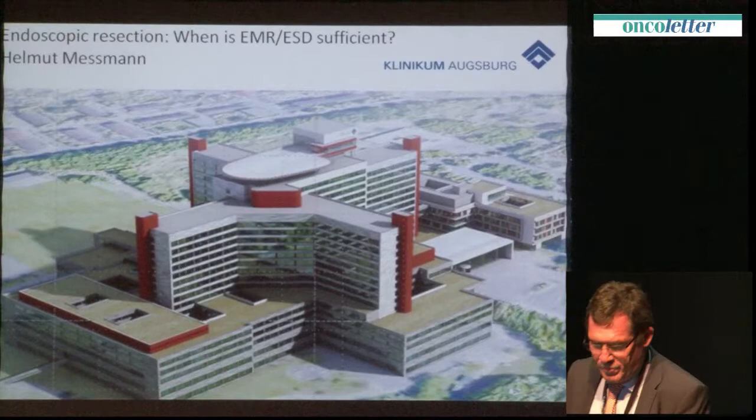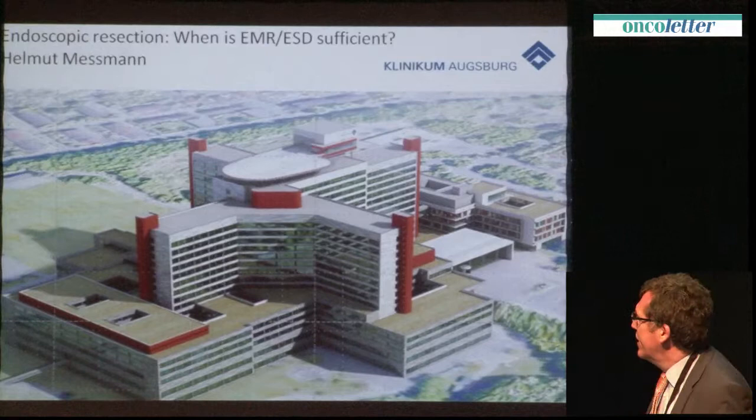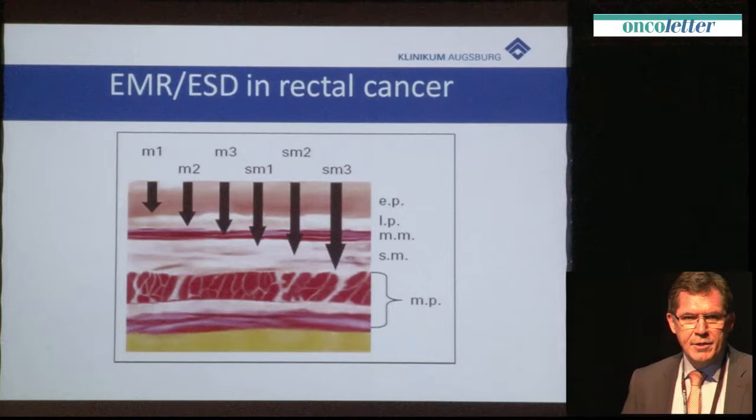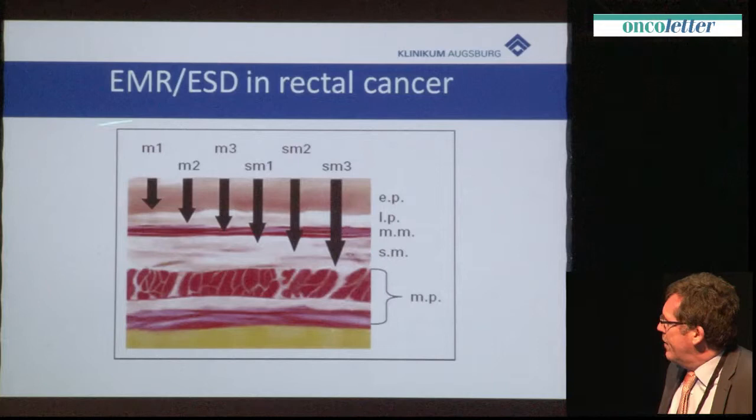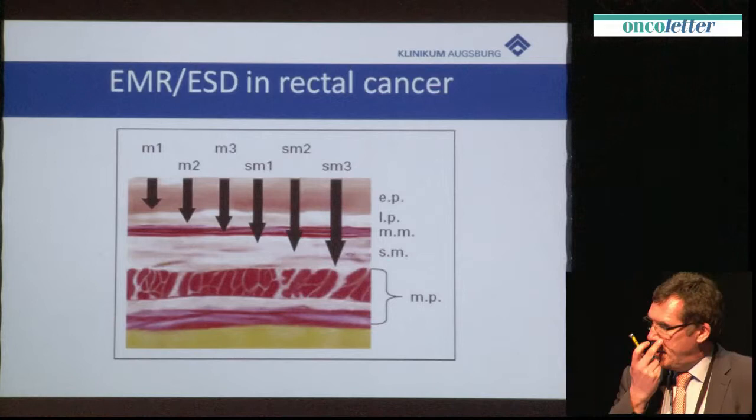I would say yes, it can, but it has limitations. If you treat malignancy in the GI tract, it depends on the penetration depth. Mucosal cancer has a risk of 0% to have positive lymph nodes. The borderline will be the submucosa, and in different locations of the GI tract, the risk is different for lymph node metastasis.